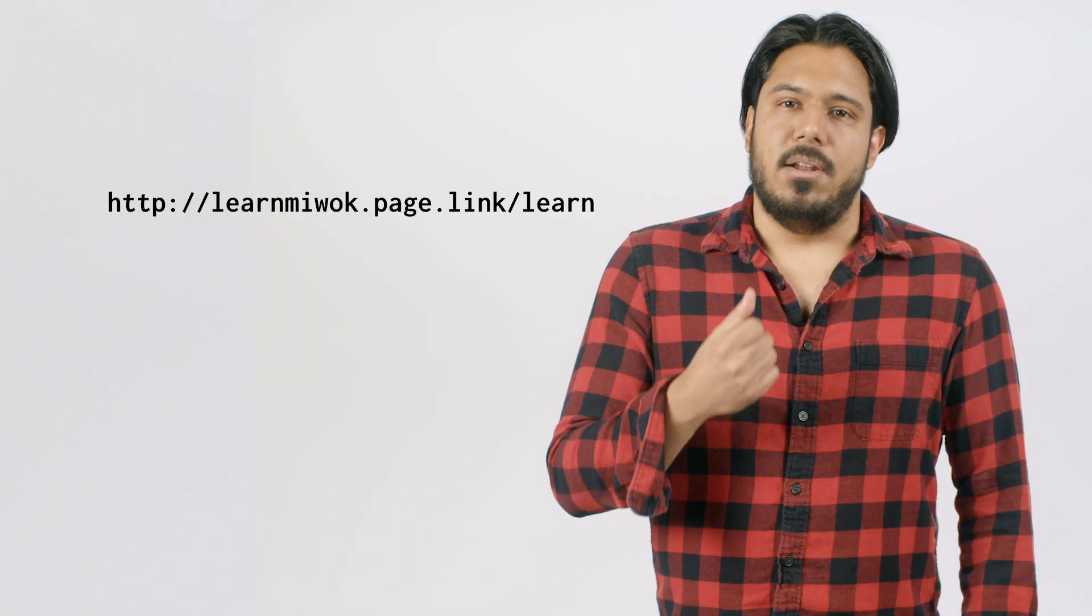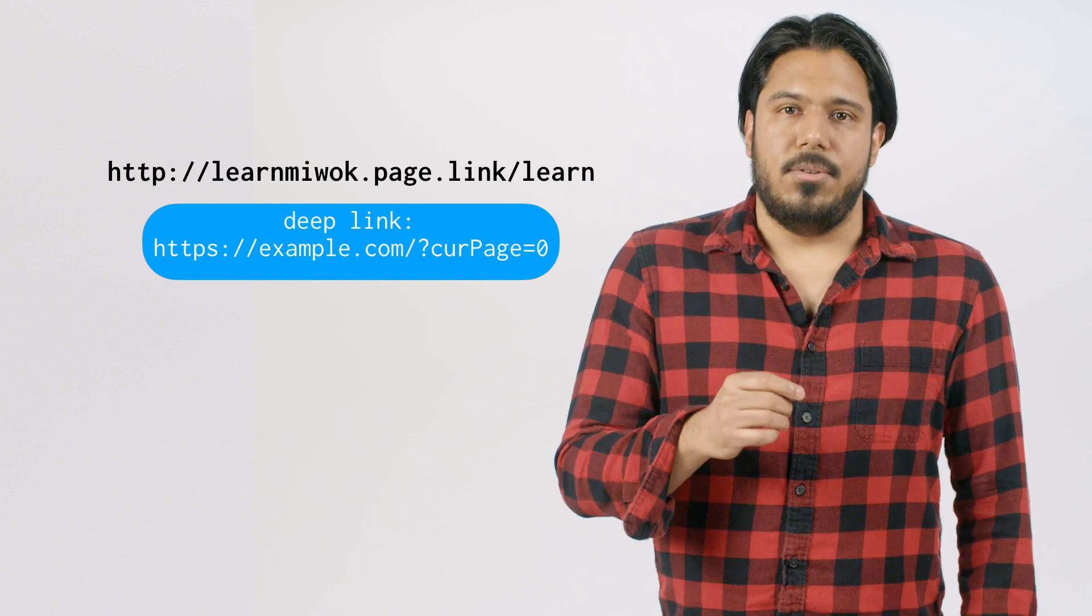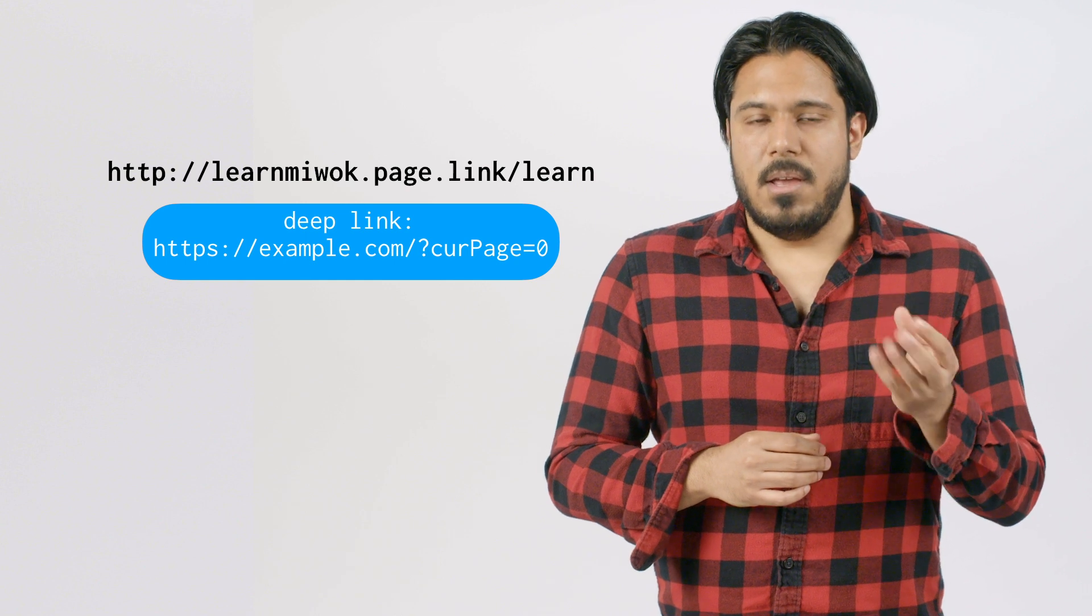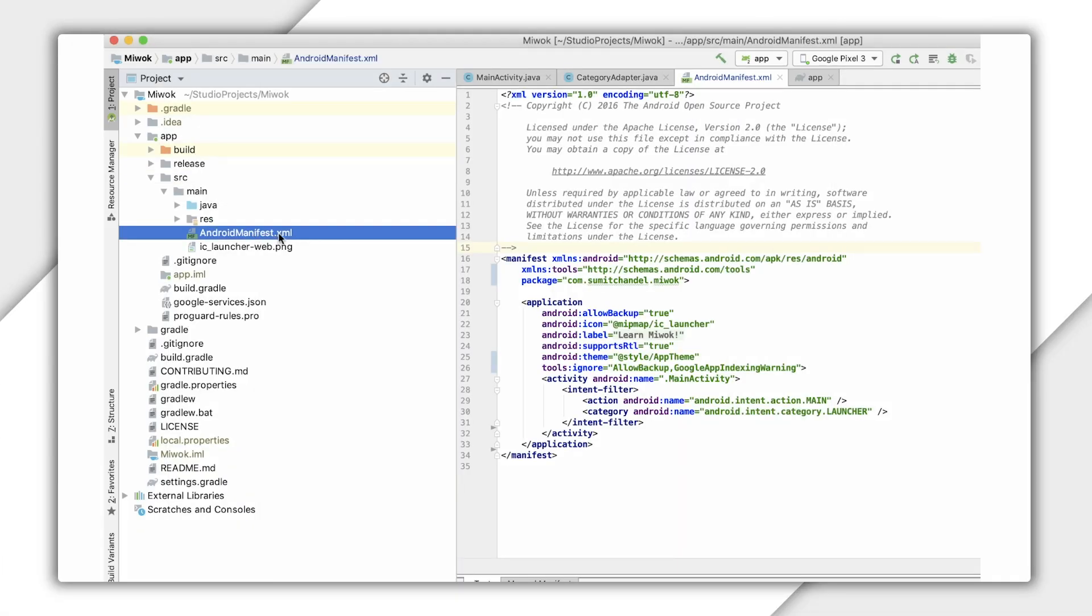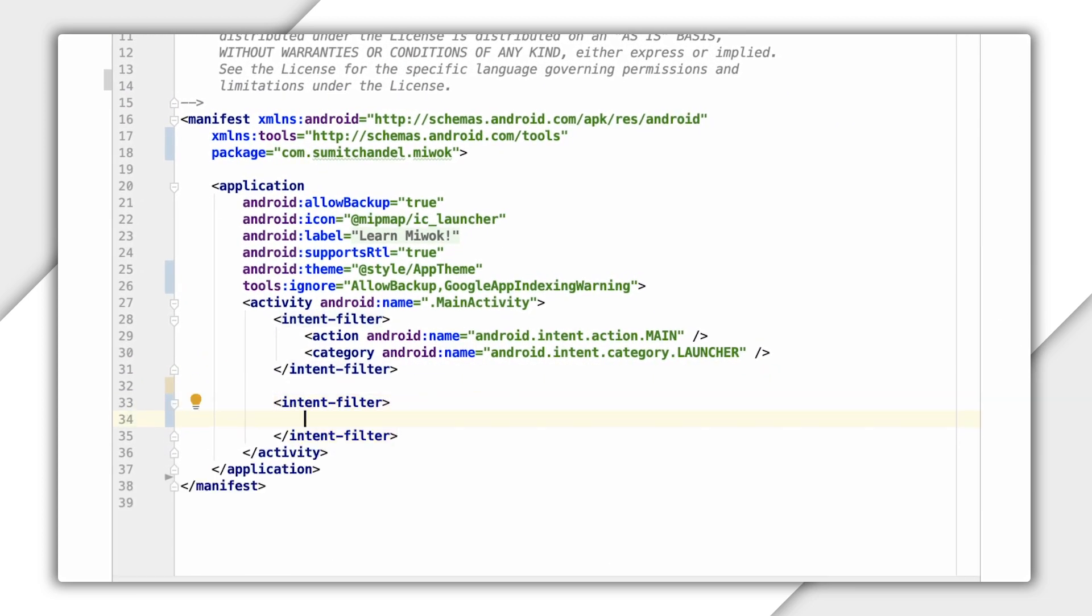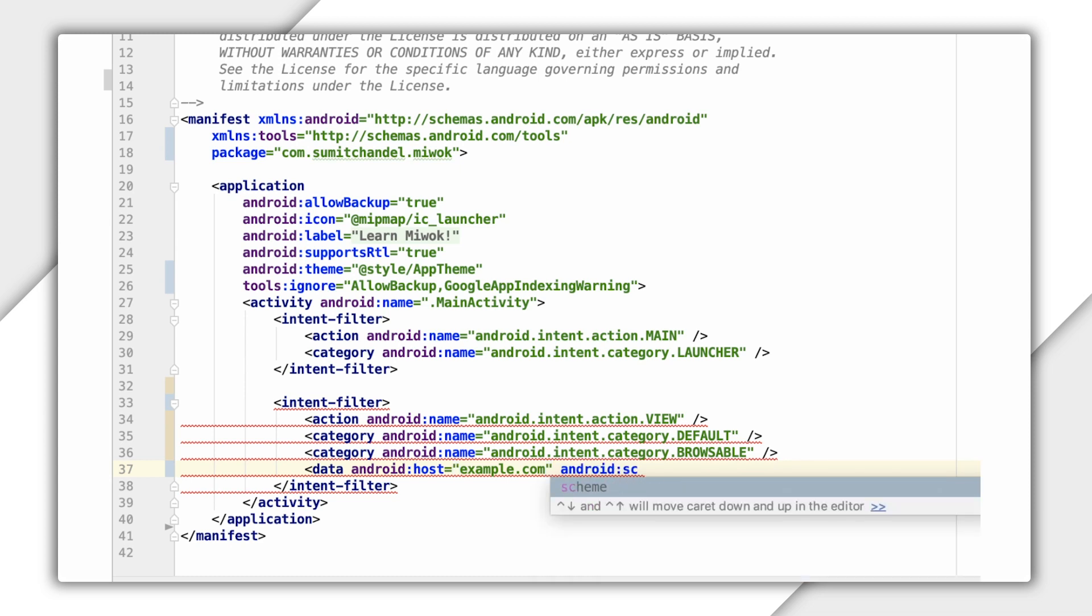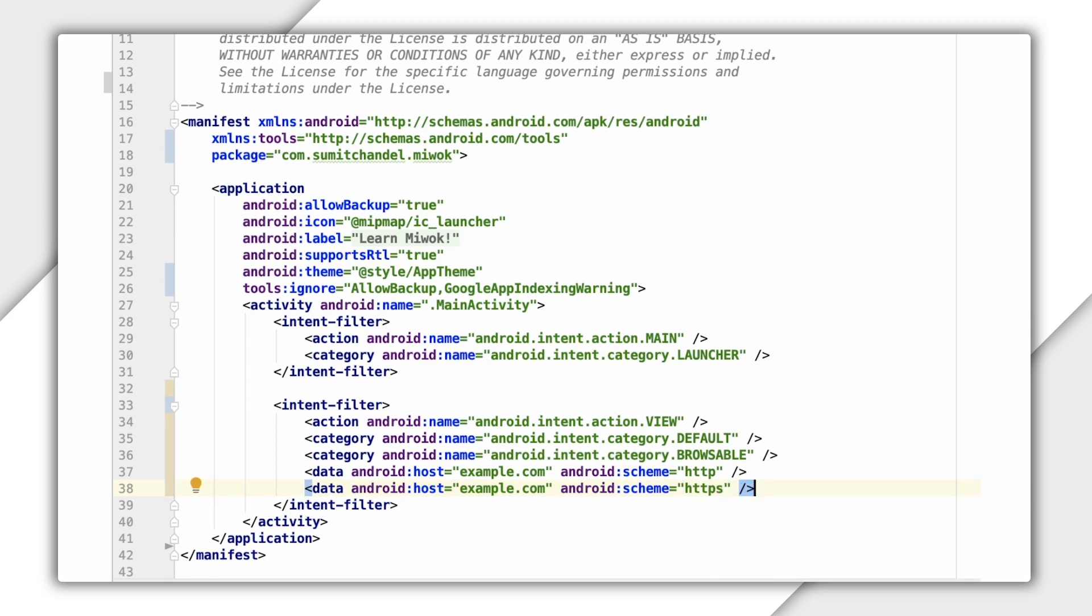Next, remember the dynamic link we created in the console and the deep link parameter that we set up for it? Well, we'll need to configure which activity we would like to handle that deep link URL contained within that dynamic link. And we can do that by configuring that information in our Android manifest file via intent filters on activities. So let me start with my main activity, which for my purposes will handle all dynamic links that lead to my app. So I'm going to add this new intent filter with a view action and a default and browsable category, and then I'm going to add these data tags that will tell it which deep link URLs it should handle.